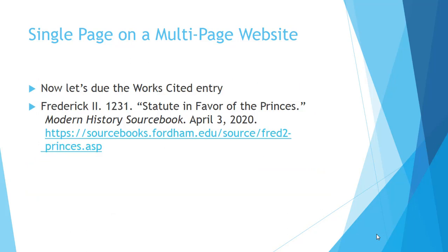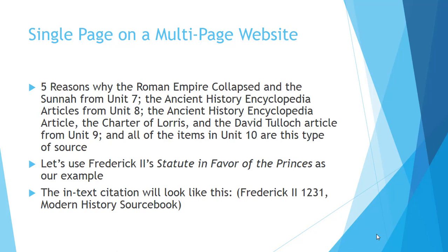The works cited entry looks a little bit different because you have to include a couple of different things. Because it's an electronic source, you have to give me a URL as well as the last date you looked at that resource. So again, it's Frederick II — 1231 — the original author and year. Then the title of the document in quotations: Statute in Favor of the Princes. Then the name of the website, Medieval History Source Book, in italics. Then the last date that you accessed that resource. I'm filming this on April 3rd, so that's the date I'll use. Then copy and paste the URL from the website into your Word document. All of those sources are cited that same way for both in-text and the works cited page.